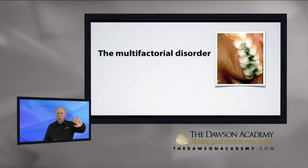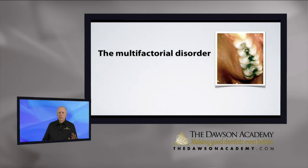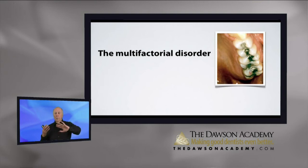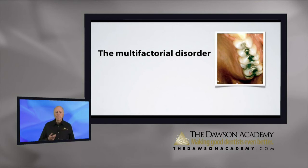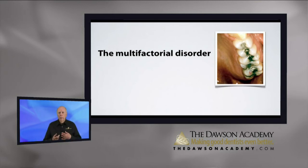Other teeth get loose. We'll very often see spaces develop between upper anterior teeth as a result of a posterior interference that drives the jaw forward. Correct the posterior interference, let the jaw go back into centric, and that diastema will just close right back down. The teeth can also wear, get loose, move, or get sore.